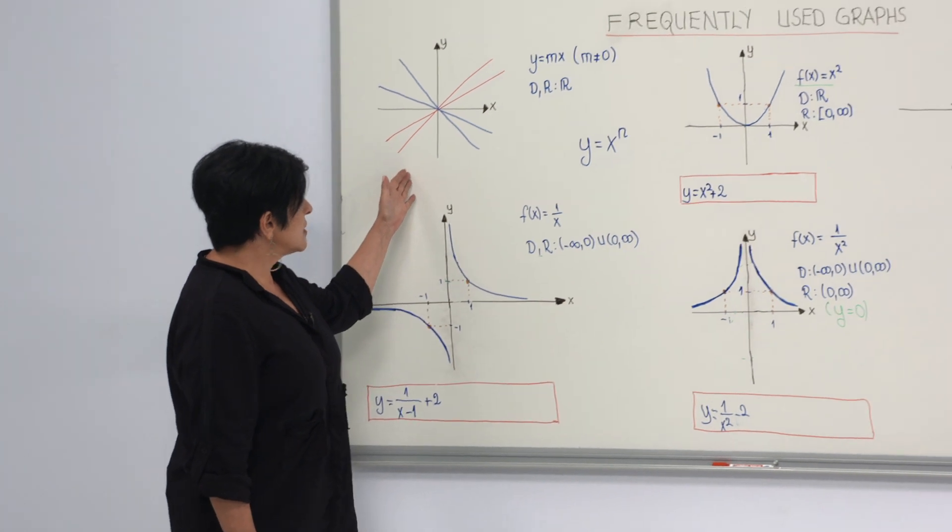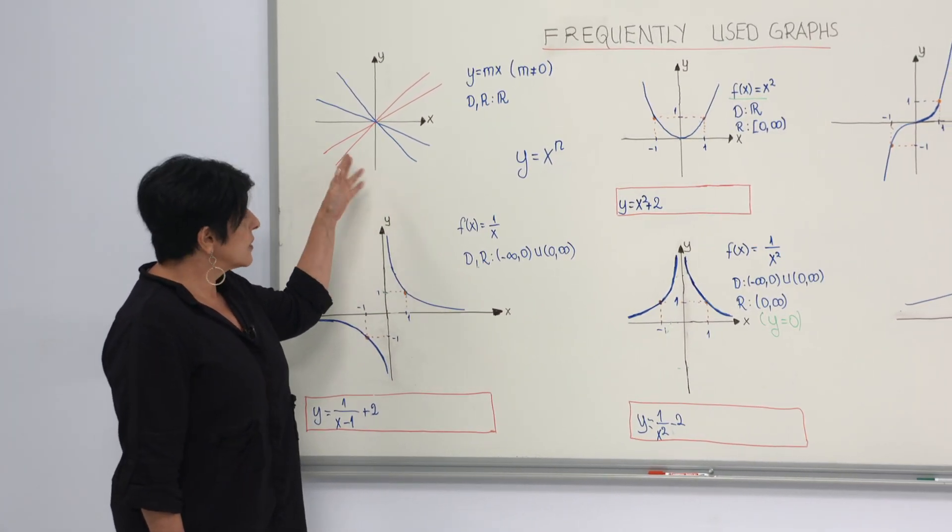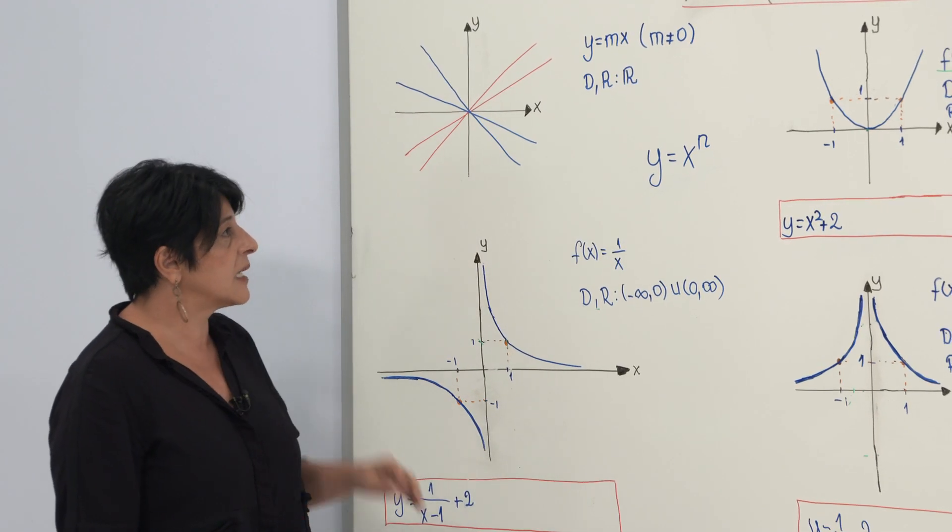The first one illustrates the graphs of lines passing through the origin. The ones in red have positive slopes, whereas the ones in blue have negative slopes.